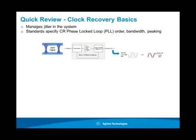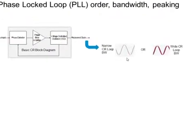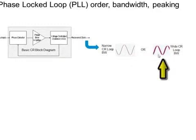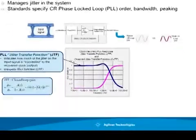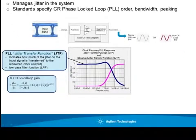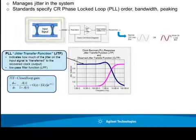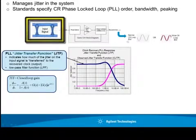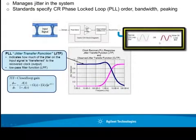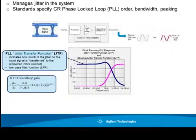Here's a block diagram of a clock recovery circuit. The input signal comes in on the left-hand side, and what comes out is a recovered clock which, depending on the loop bandwidth of your clock recovery circuit, may have a little bit of jitter or quite a bit of jitter on it. How much jitter is determined by the jitter transfer function, which is the low-pass function shown in dark blue. It's an indication of how much jitter will be transferred from the input signal onto the recovered clock, which is the output signal — jitter out over jitter in.